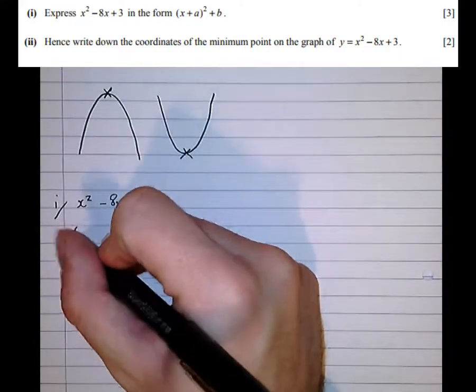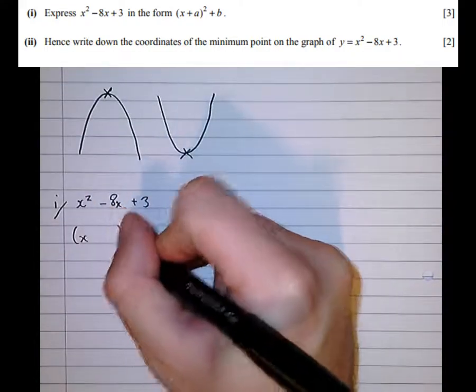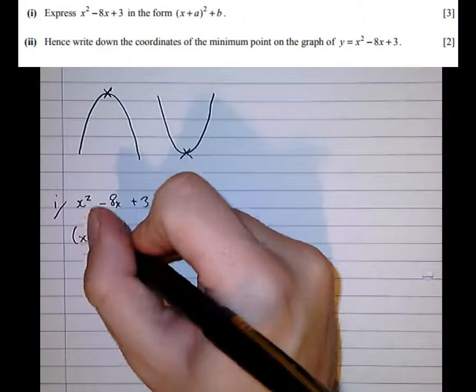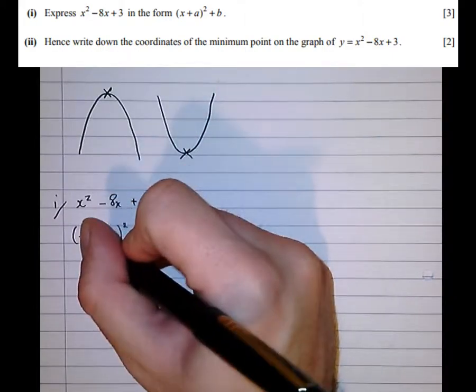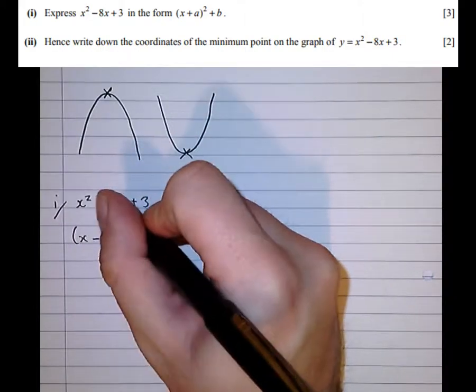Well first of all let's put it in complete square form. So there's our empty complete square bracket and as always the number in the bracket is always half that in front of x.